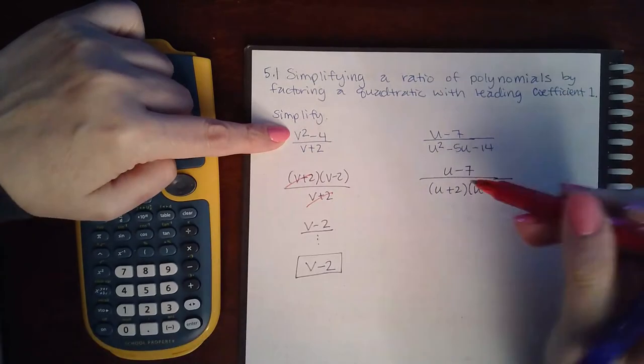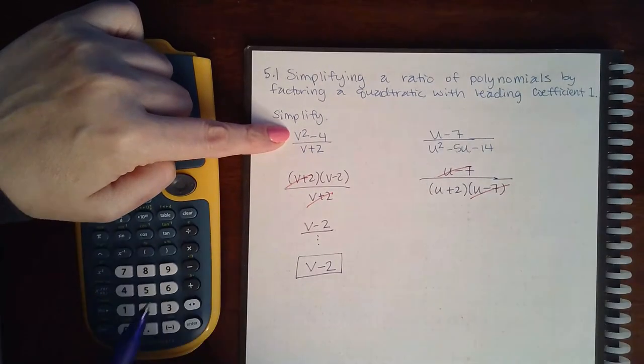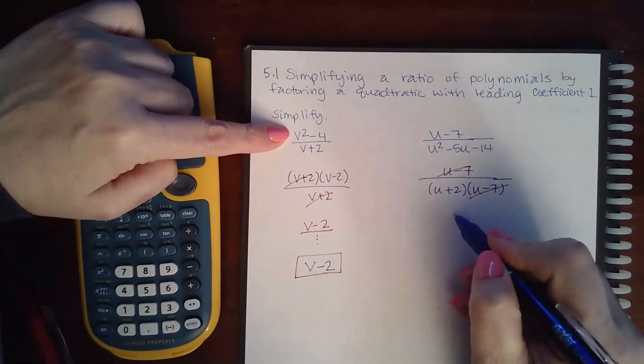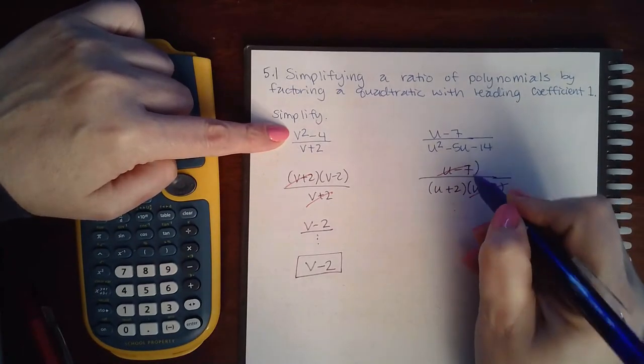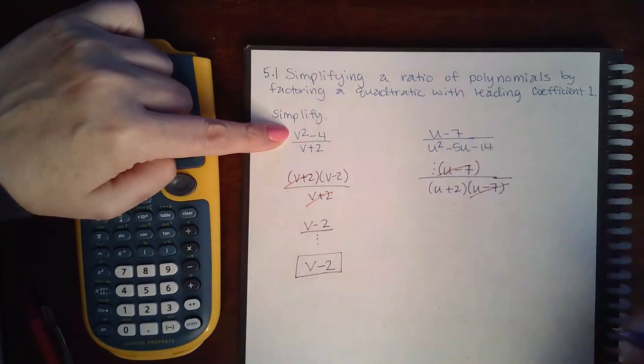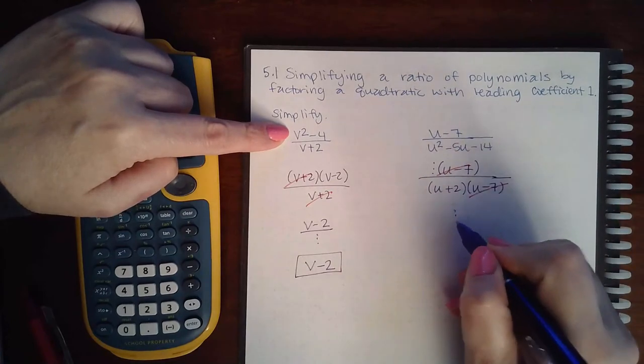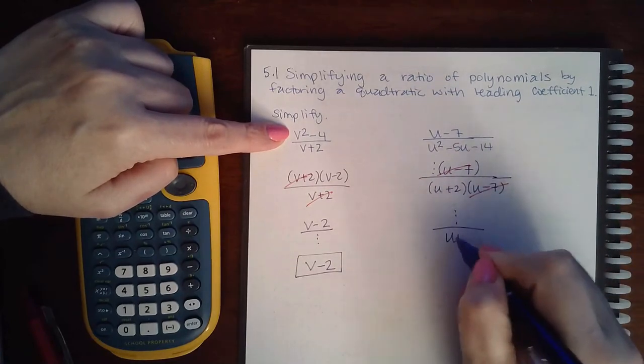Then the u minus 7 factor here cancels with the u minus 7 factor there, leaving me with an invisible 1. For instance, if it was written like this, you get the invisible 1 in the numerator and u plus 2 in the denominator.